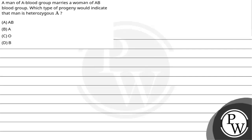Let's see this question. A man of A blood group marries a woman of AB blood group. Which type of progeny would indicate that the man is heterozygous A? Option A: AB. Option B: A. Option C: O. And option D: B.